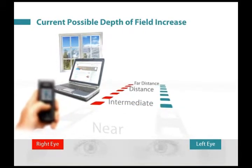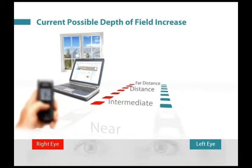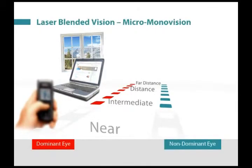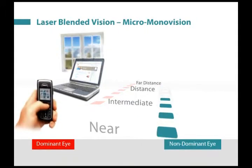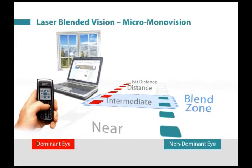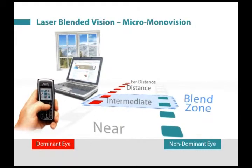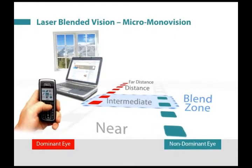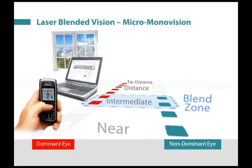Therefore, this strategy alone cannot provide full presbyopic correction without compromising safety. So, we have combined the increased depth of field with a 1.5 diopter micro-monovision to achieve good near vision with a lower degree of anisometropia than traditional monovision.